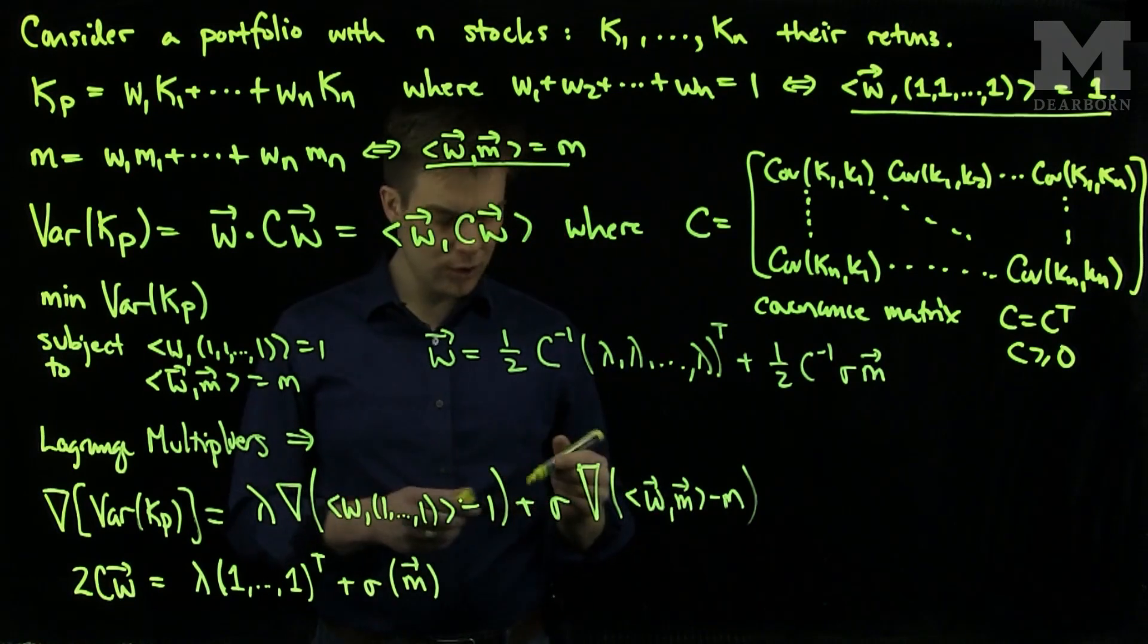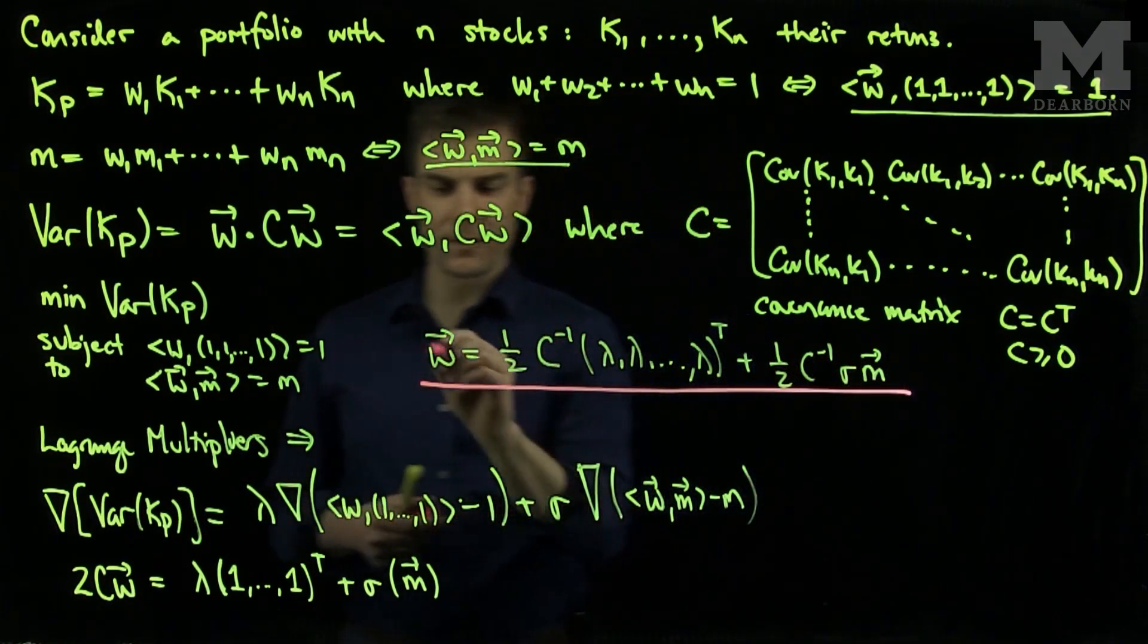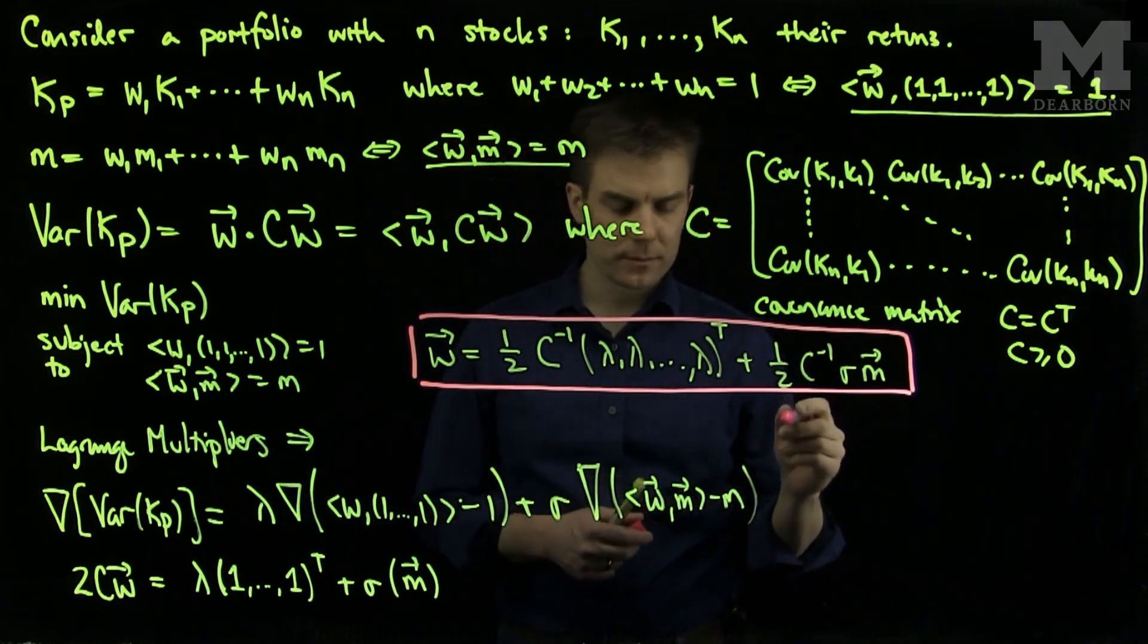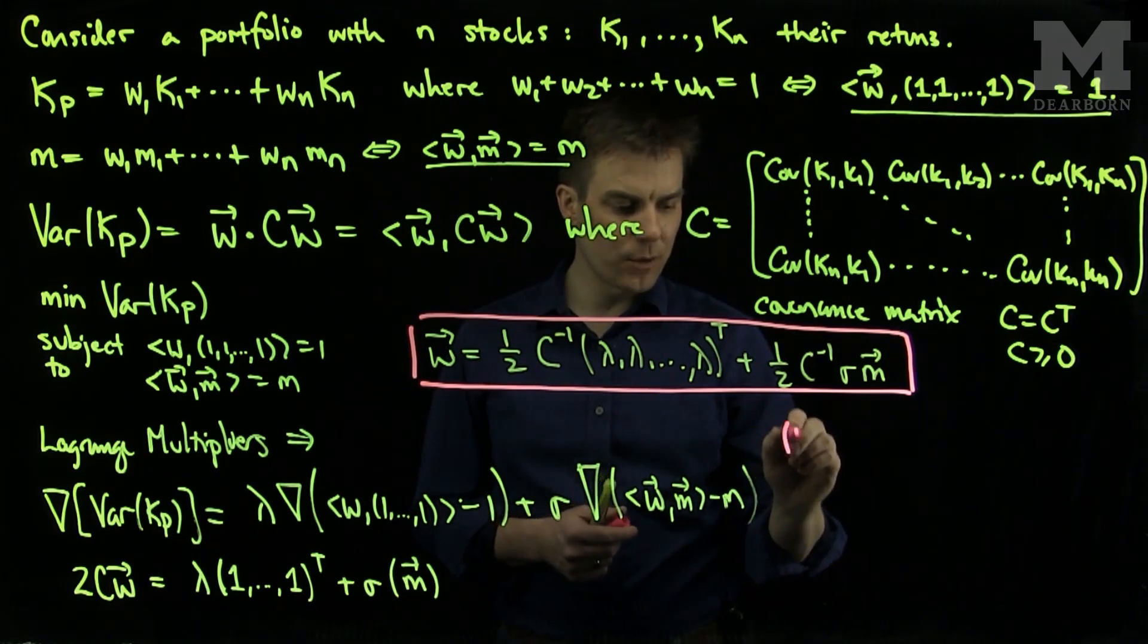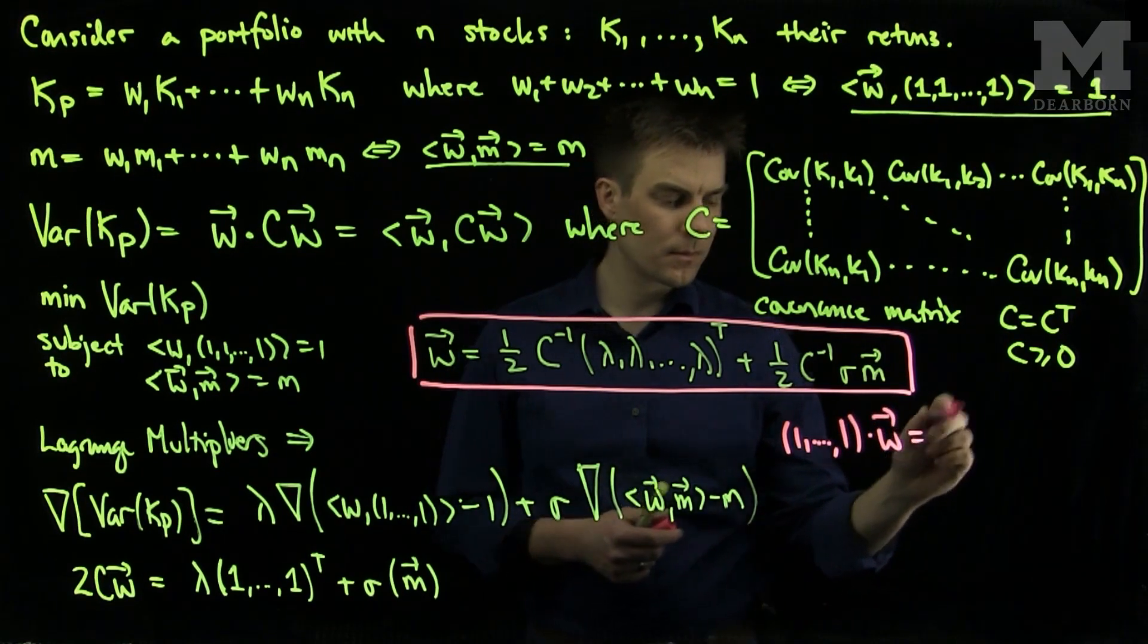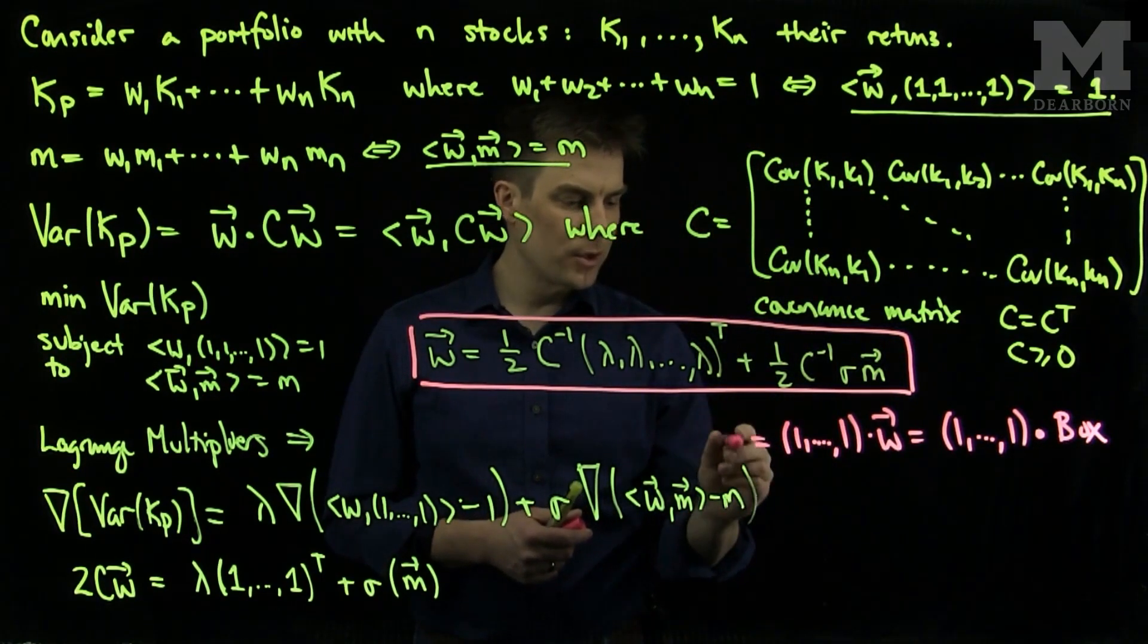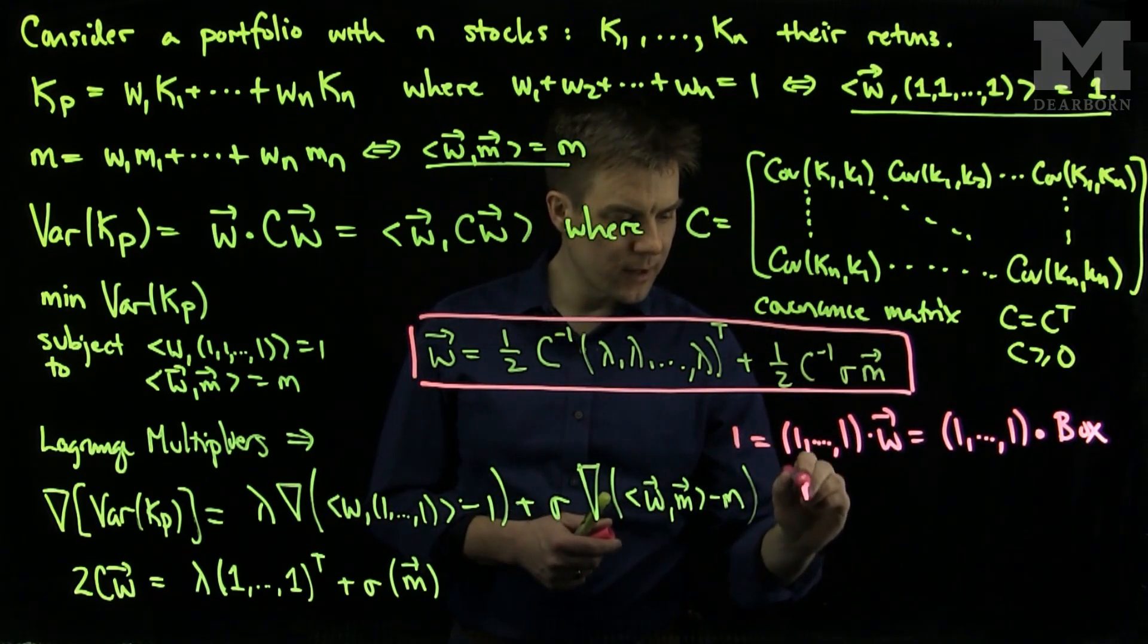So once we have this relationship, it's sufficient to find what lambda and sigma will be. To do so, we will note that if I take this pink box equation and dot it with a whole bunch of ones, so if I dot w with a whole bunch of ones, w dot with ones is equal to one. And if I dot w with the vector m, I will get m.